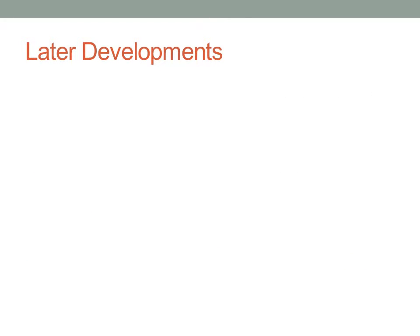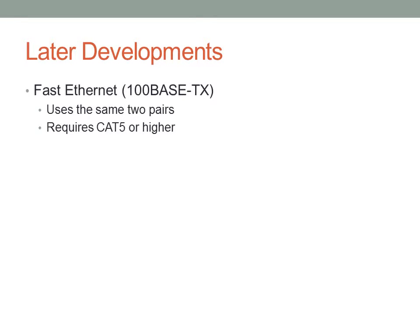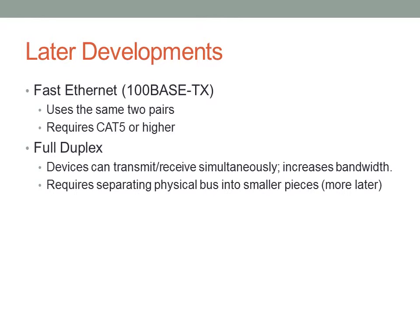Now we get to discuss some of the later developments associated with Ethernet. 100BaseTX, or Fast Ethernet, uses the same two pairs that regular Ethernet uses. However, because of the higher frequency, Ethernet typically uses CAT3 while Fast Ethernet requires CAT5 or higher. Full duplex we'll talk more about when we get to switching, but basically if there are only two devices on an Ethernet segment, there are only two devices using the transmit and receive pairs, so we don't have to worry about more than one device talking at the same time. As a result, devices can transmit and receive simultaneously.